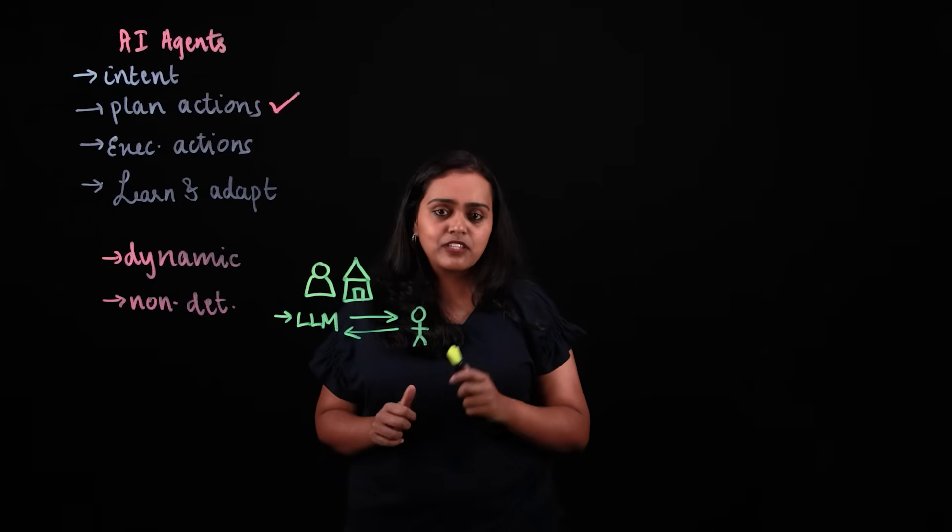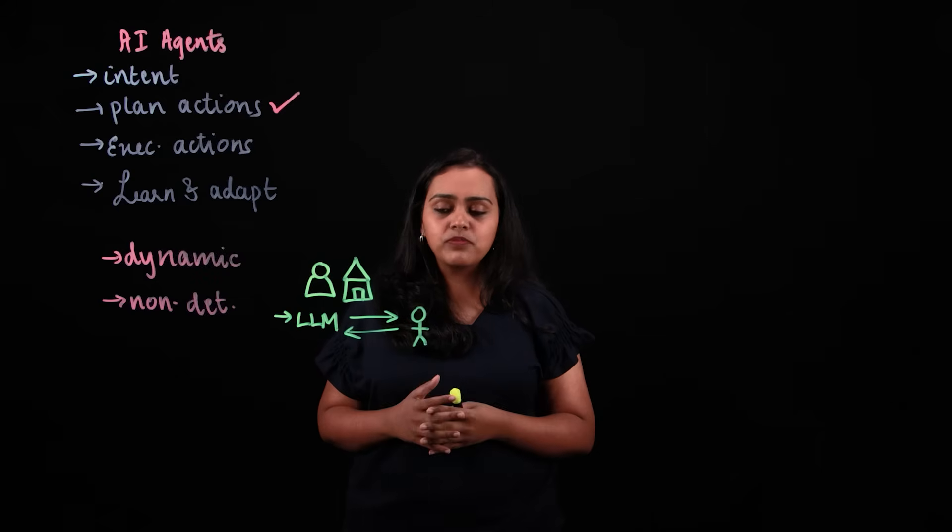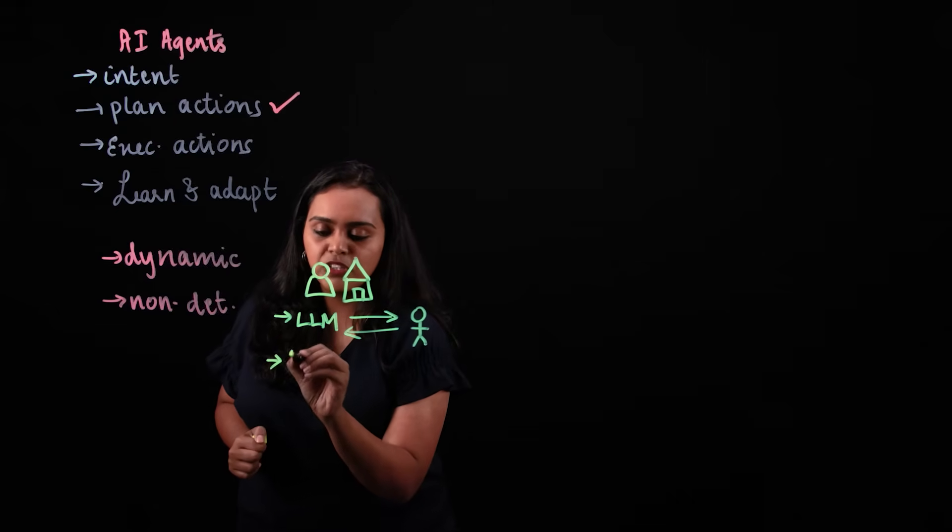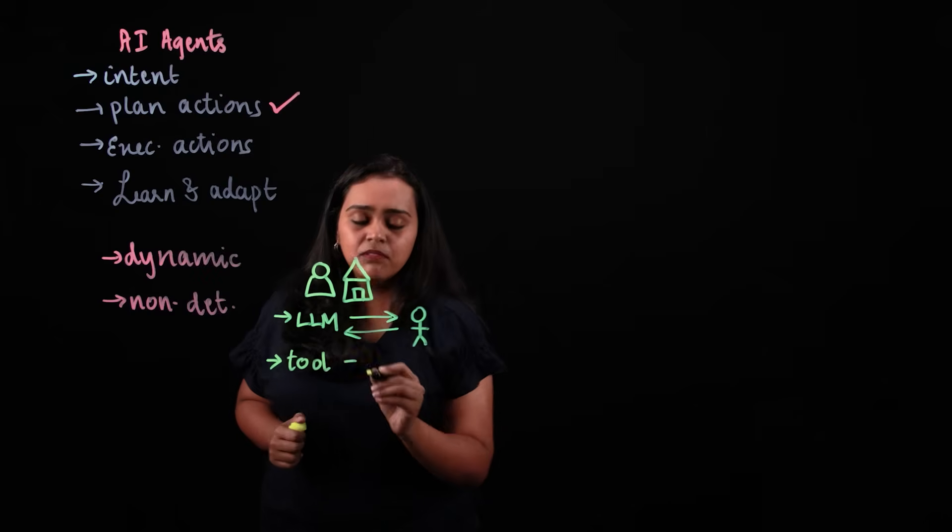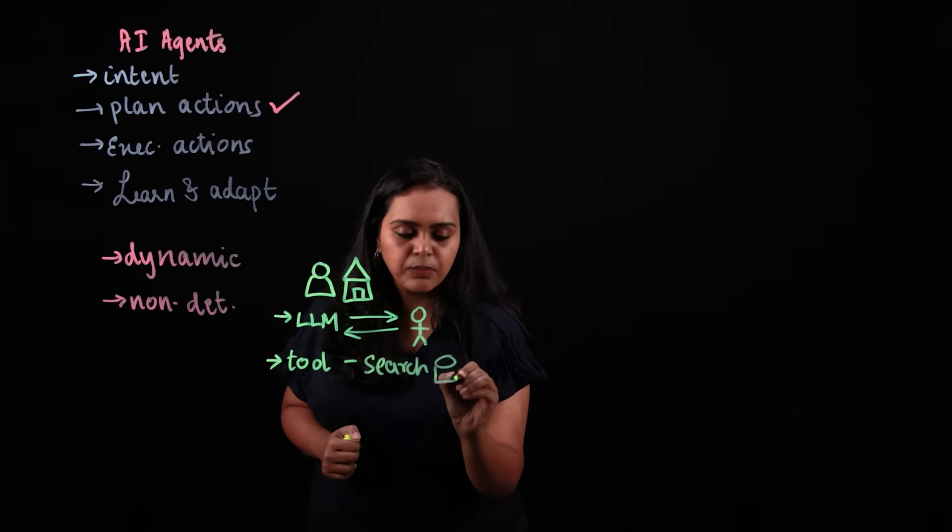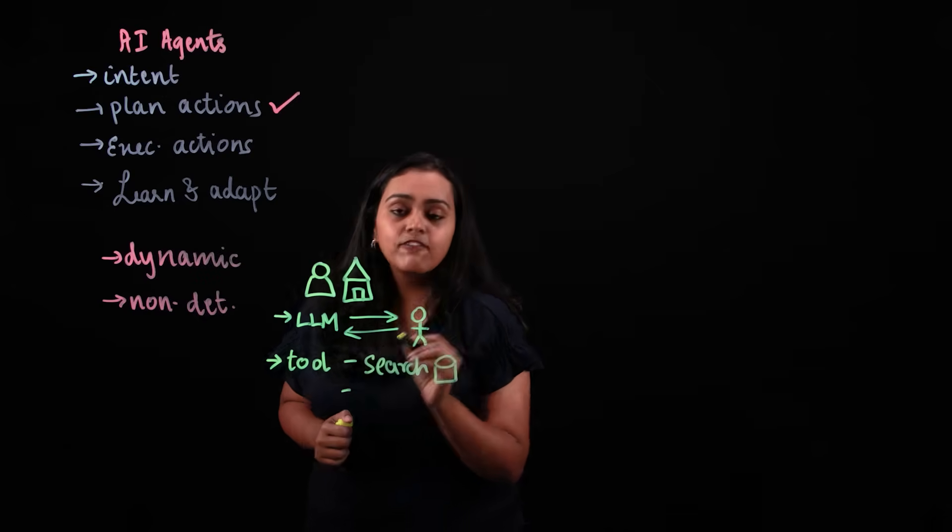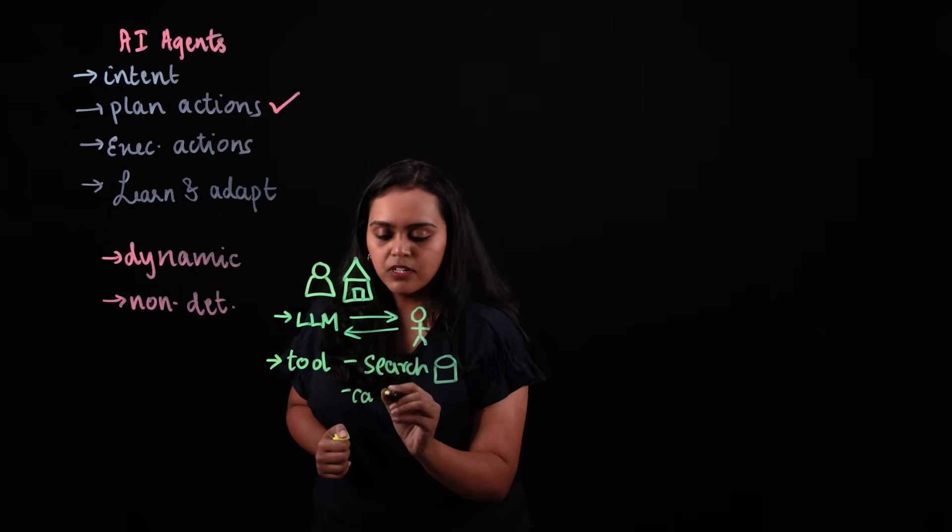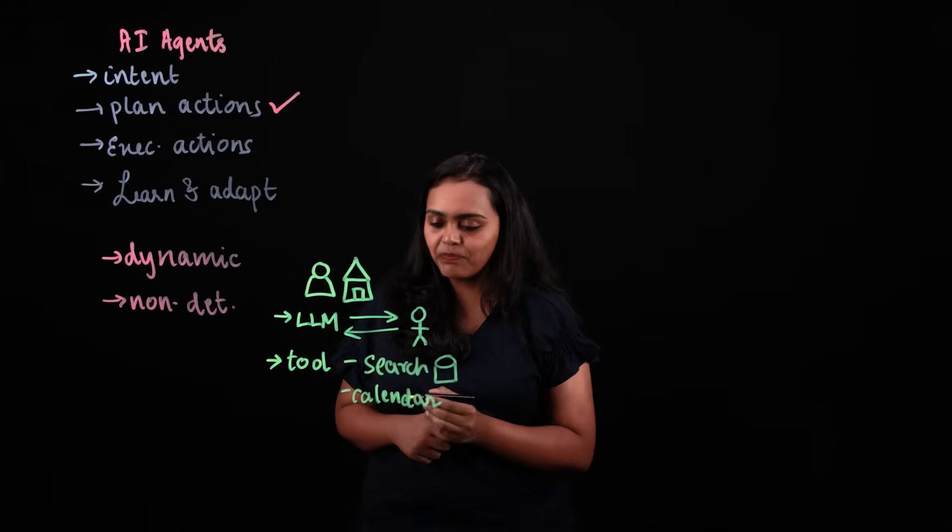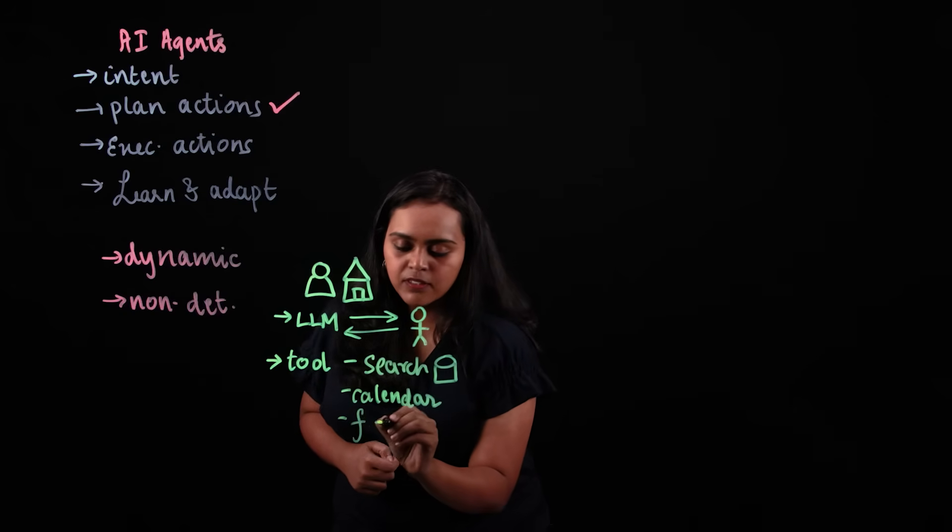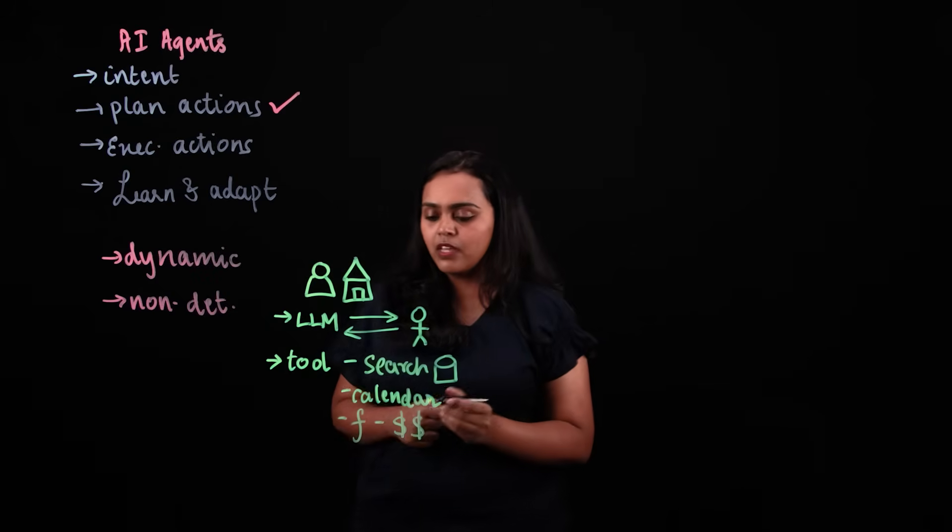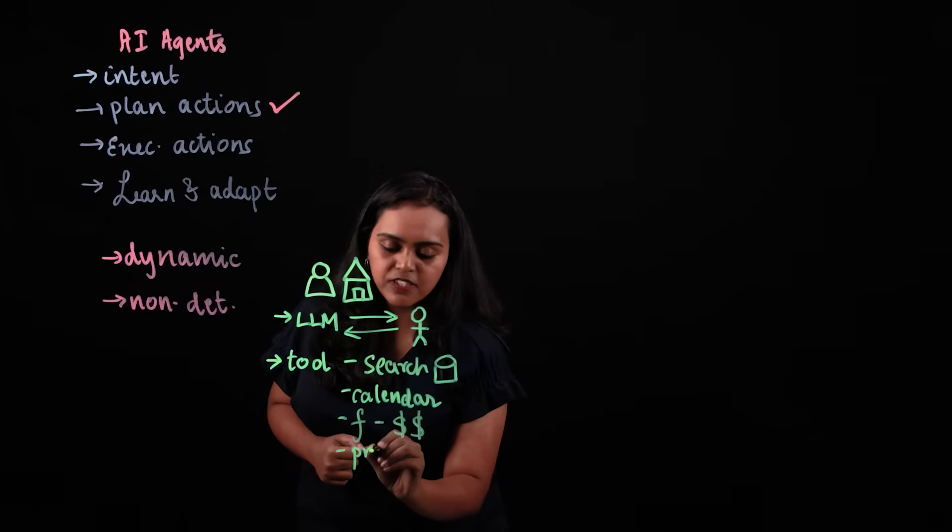It's going to take that information and search a database to retrieve all the available homes that meet that criteria. In order to do that, we need to power this agent with tools. The tools could be anything. We have search, where it searches a database. We could also have a calendar tool that schedules a meeting with a realtor or a showing. The agent could also call a function that computes the mortgage payment for the customer to make a decision, or initiate a pre-approval process if needed.